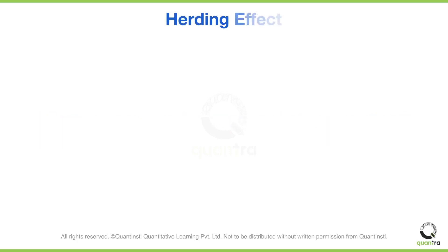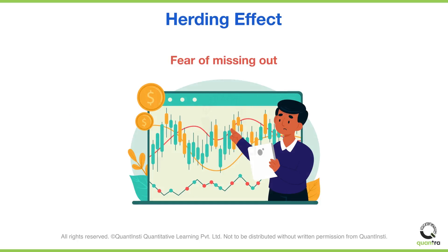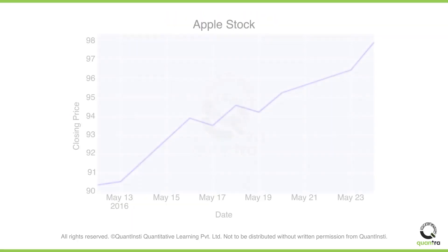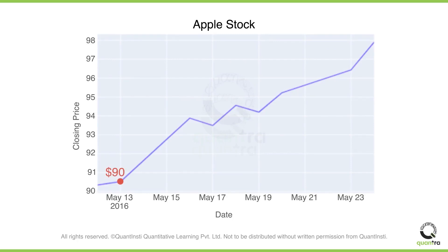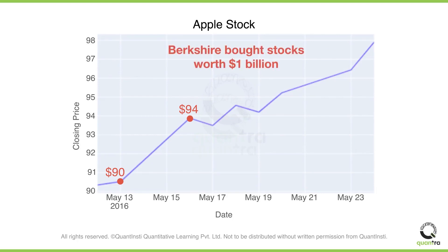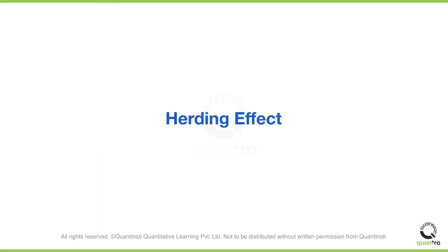One of the most common reasons is the fear of missing out, which results in the herding effect. Apple's stock price stood at $90 on May 13, 2016 and steadily increased. There was an upward momentum, which led to the price reaching $94 on May 16. During the day, Berkshire Hathaway's earnings report revealed that they had bought stocks worth $1 billion in the previous quarter. As word spread that Warren Buffett had invested in Apple, the buy volume started to increase. By 24th May 2016, Apple's stock price reached $98. This is an example of the herding effect.